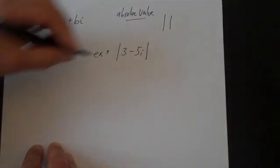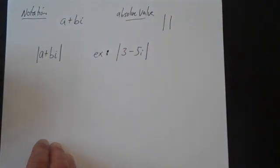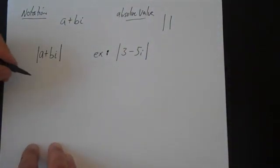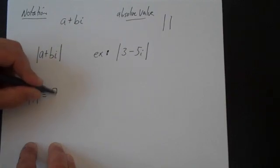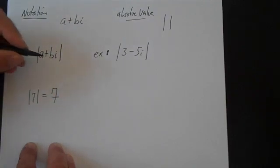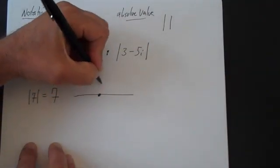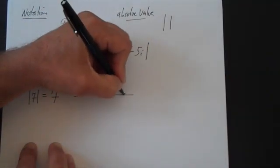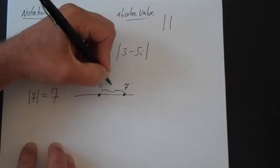The easiest way to think about this is to think about absolute value as the distance from zero. That makes sense — we've done that before. The absolute value of 7 is equal to 7. If you put that on a number line, here's 0 and here's 7, and the distance there is 7.